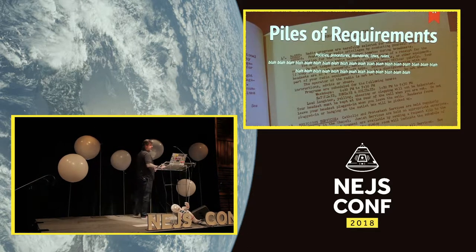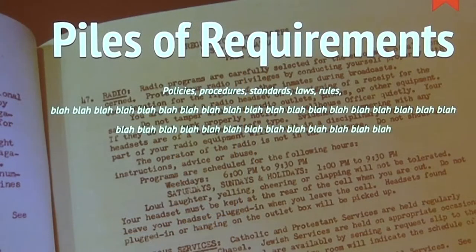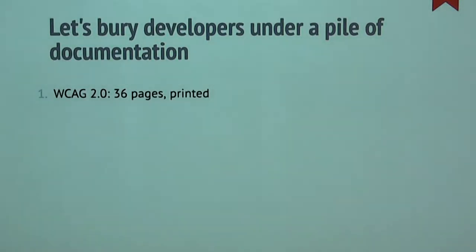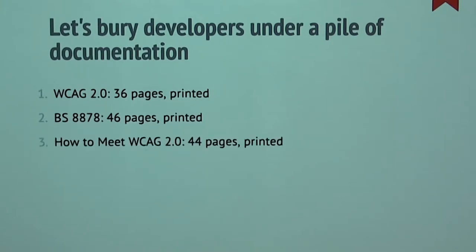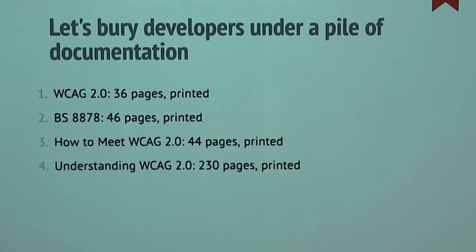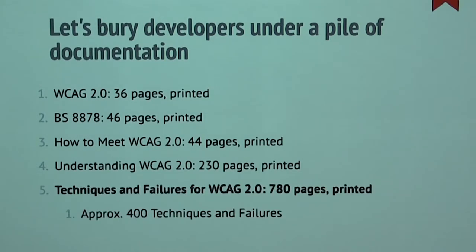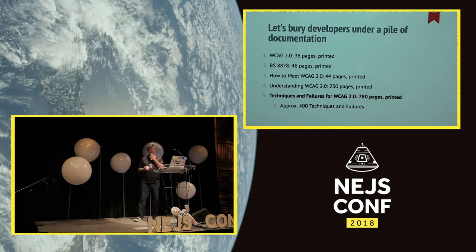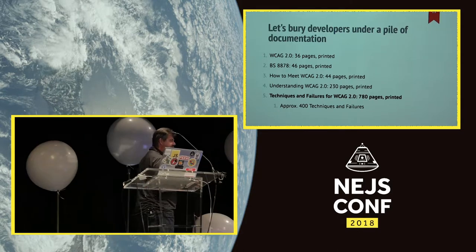We give developers piles of requirements — policies, procedures, standards, laws, and rules. The WCAG 2.0 specification is 36 pages when you print it. The BS-8878 British standard for procurement is 46 pages. How to Meet WCAG 2.0 is 44 pages. Understanding WCAG 2.0 is 230 pages. Techniques and Failures for WCAG is 780 pages — approximately 400 techniques and failures. A friend and I figured out that if you printed all of this out, it's roughly equivalent to the amount of waste produced by a sheep in a given day.